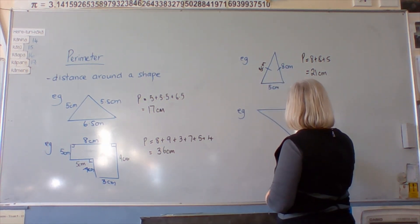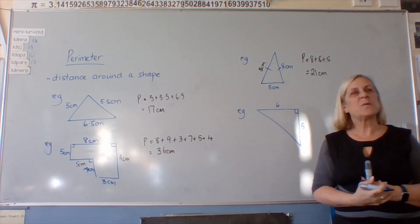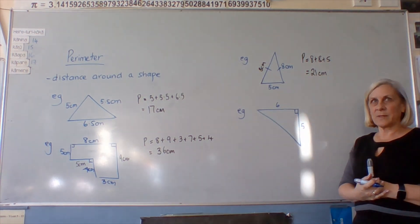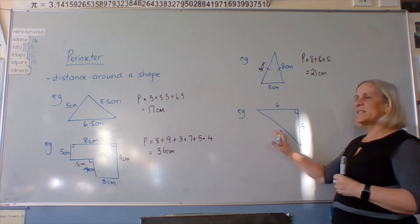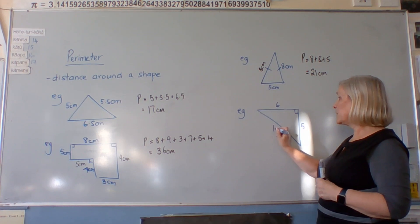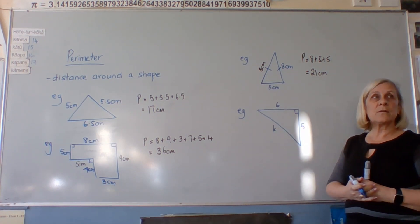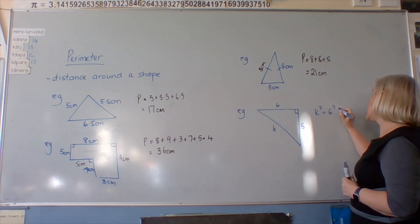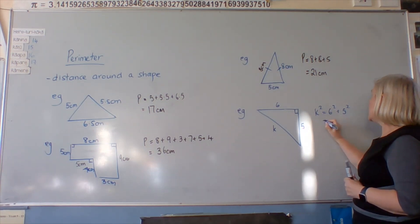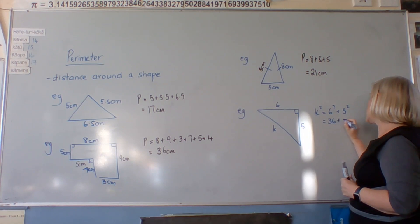I want to find the perimeter of this shape. All right? I don't know this side, but I can use Pythagoras. K squared equals 6 squared plus 5 squared equals 36 plus 25.